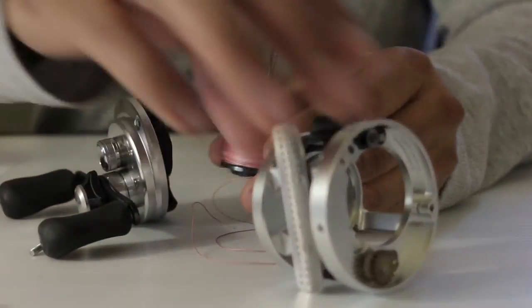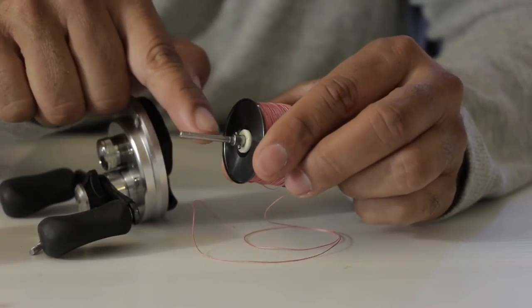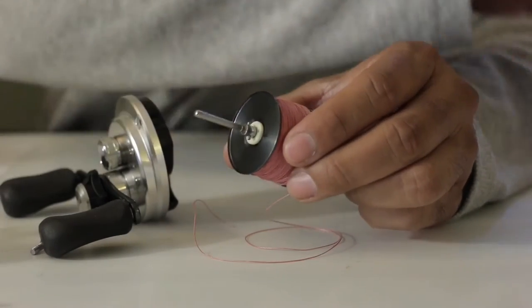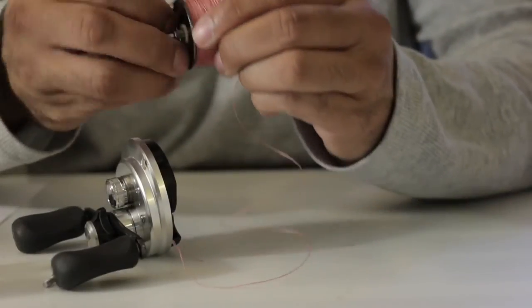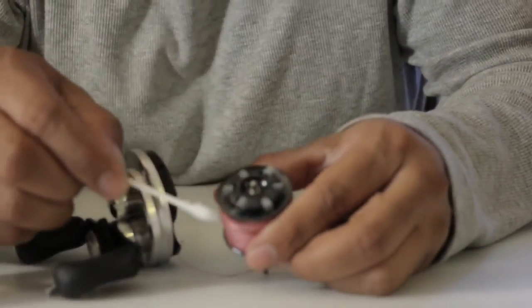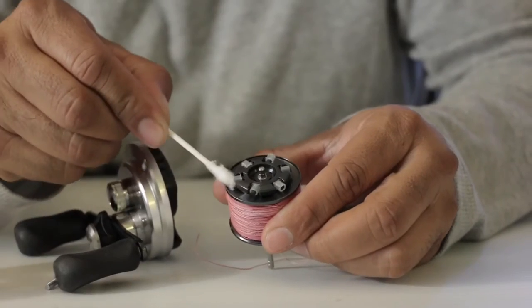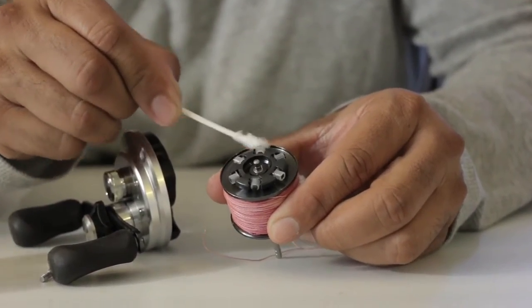Inspect your spool. This part right here, make sure that is pretty clean. You can go over that with the clean. And you also want to clean your brake system here. Nice and clean.